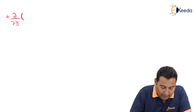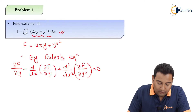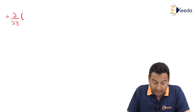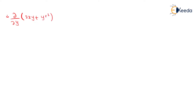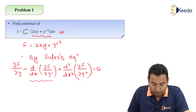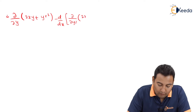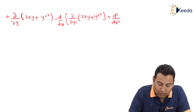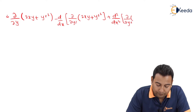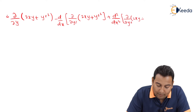Let's put the value of f. We differentiate 2xy plus y double dash squared with respect to y, y dash, and y double dash respectively, then apply d²/dx² of ∂/∂y double dash of 2xy plus y double dash squared, equal to zero.